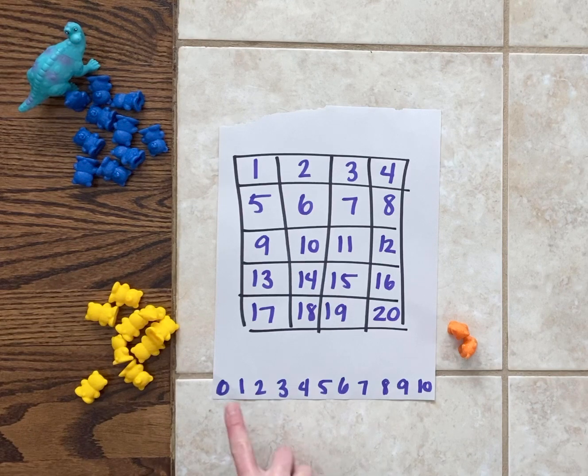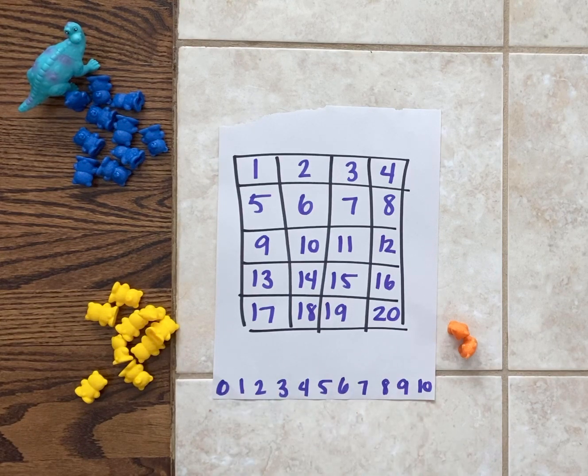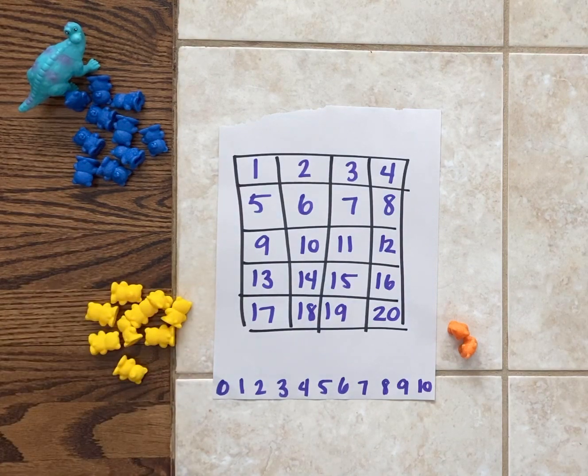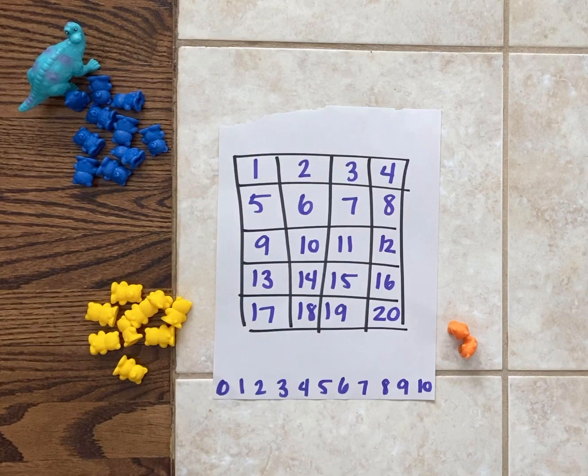Don't forget to put 0 through 10 along the bottom. You will also need something to mark your board with. It can either be two different types of items or two different colors of the same item.